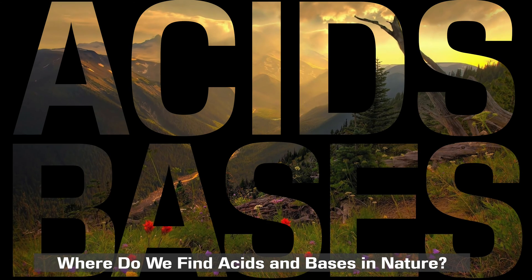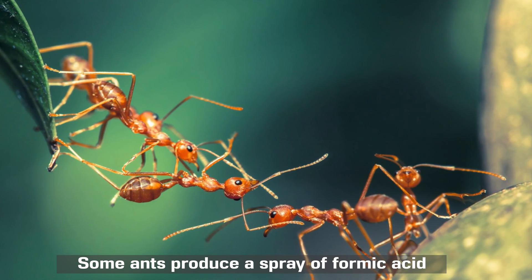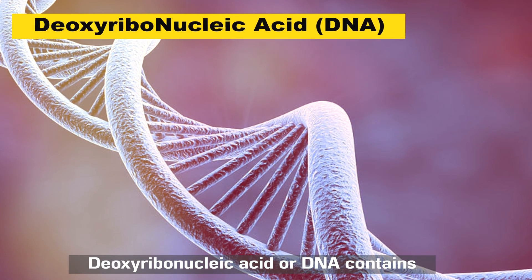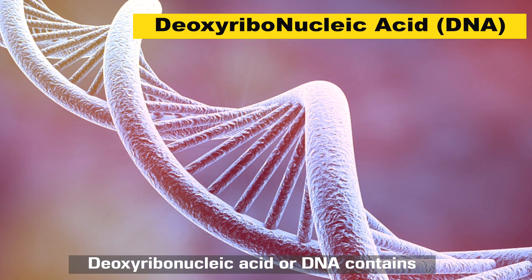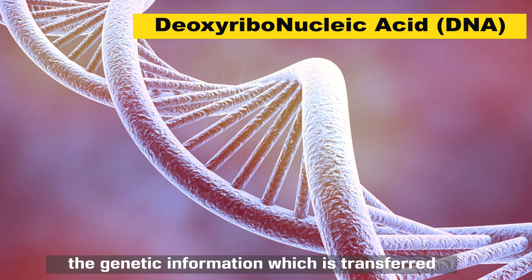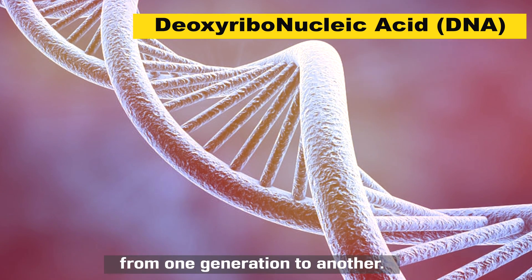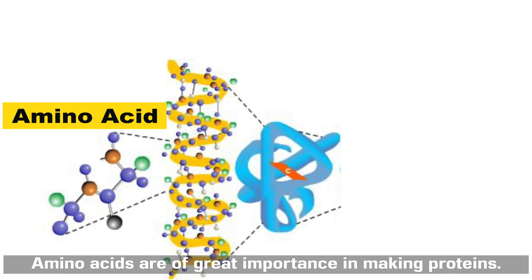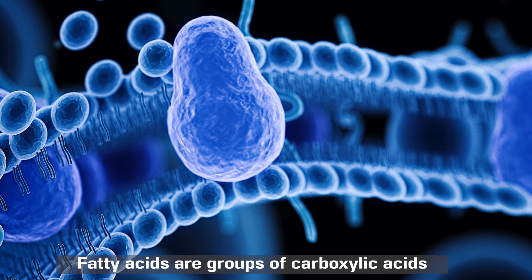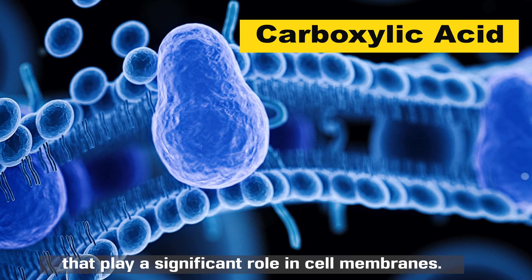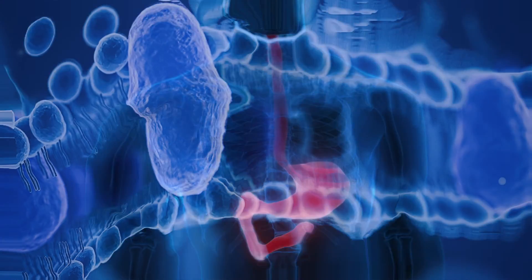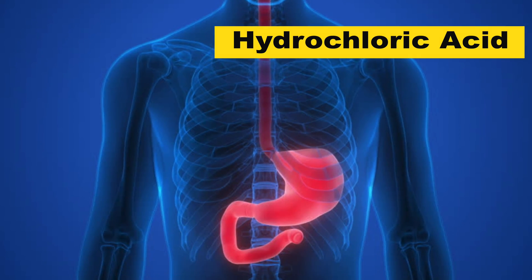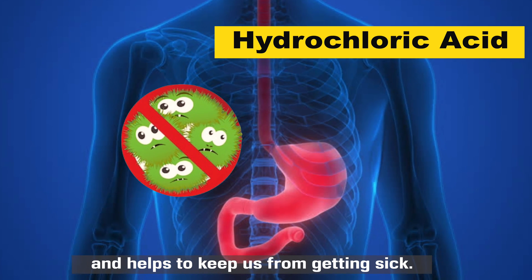Where do we find acids and bases in nature? Some ants produce a spray of formic acid from their abdomens as a defense mechanism. Deoxyribonucleic acid, or DNA, contains the genetic information which is transferred from one generation to another. Our bodies use acids and bases too — amino acids are of great importance in making proteins, and fatty acids are groups of carboxylic acids that play a significant role in cell membranes.